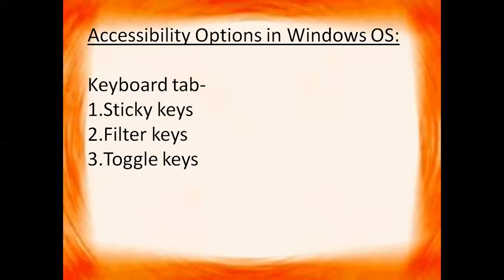First we have accessibility options in Windows OS. We have different accessibility options in Windows. First we have the keyboard tab, and in the keyboard tab we have three keys: sticky keys, filter keys, and toggle keys. Now we will know about their functioning one by one.